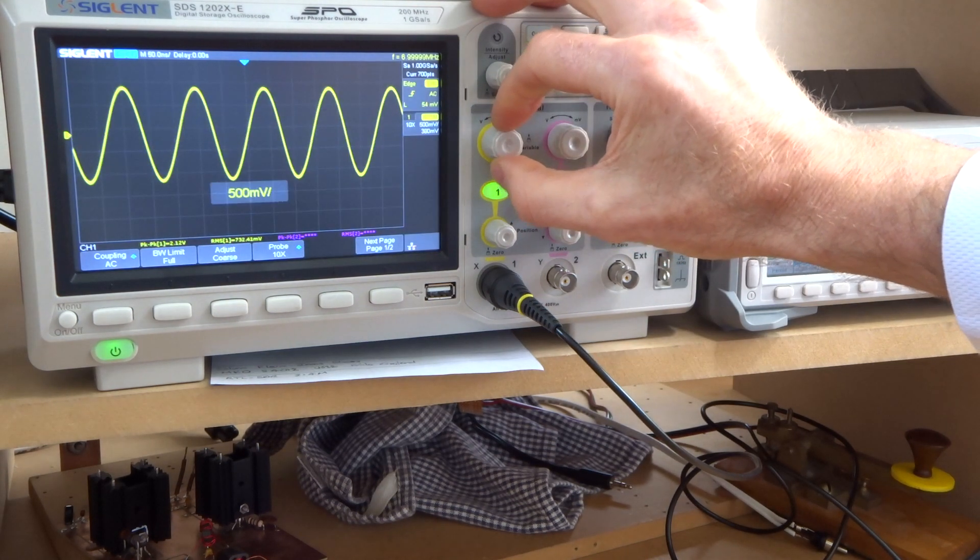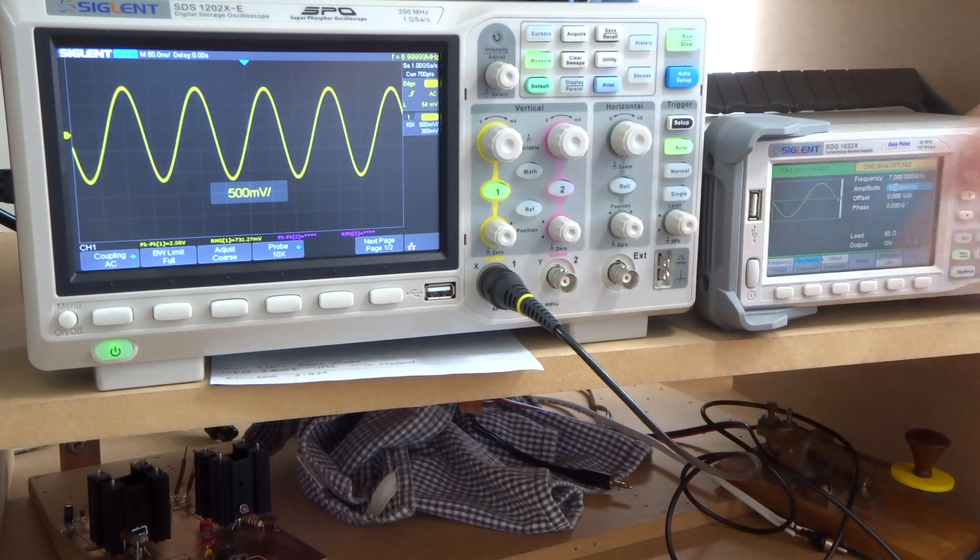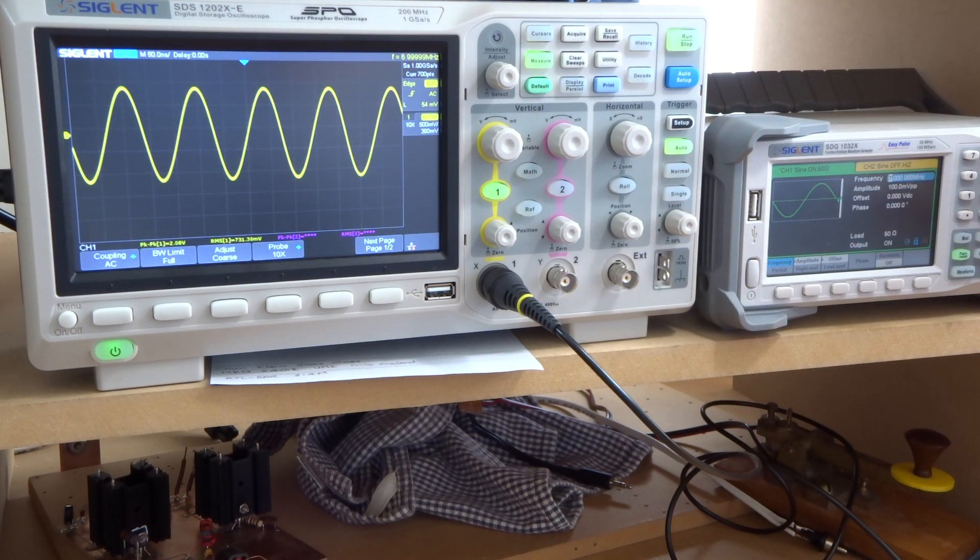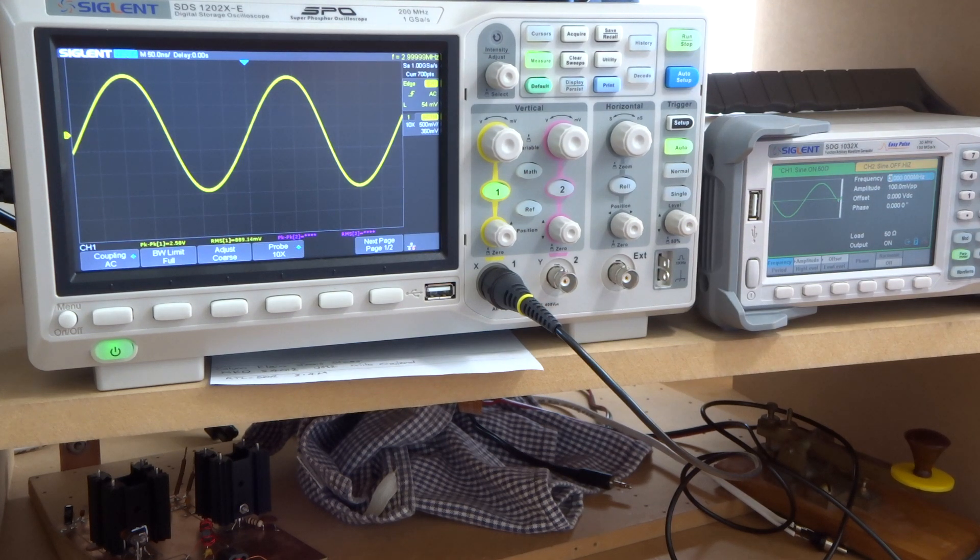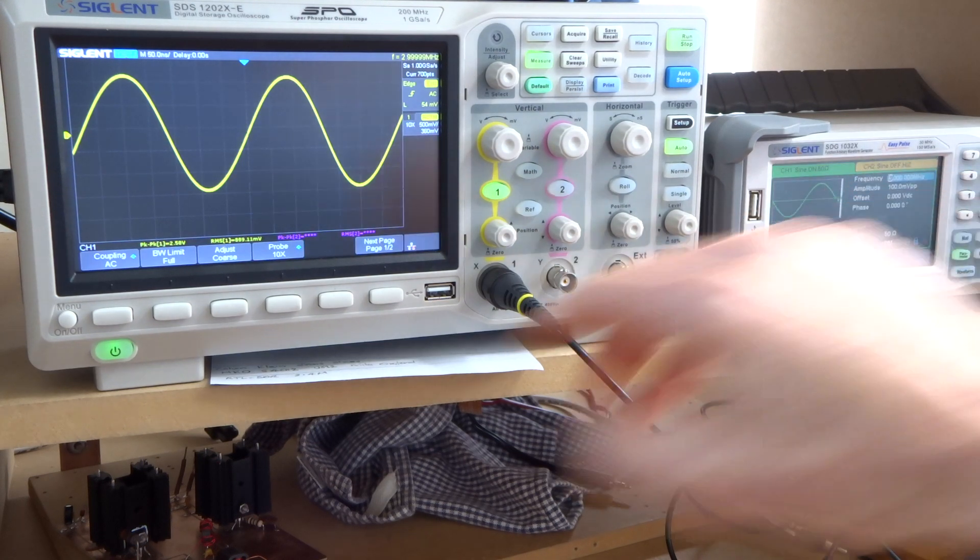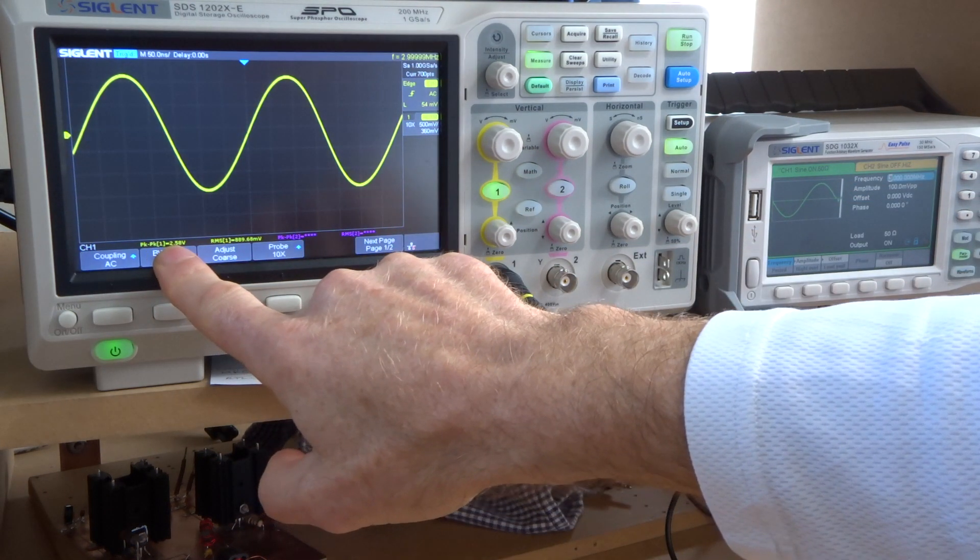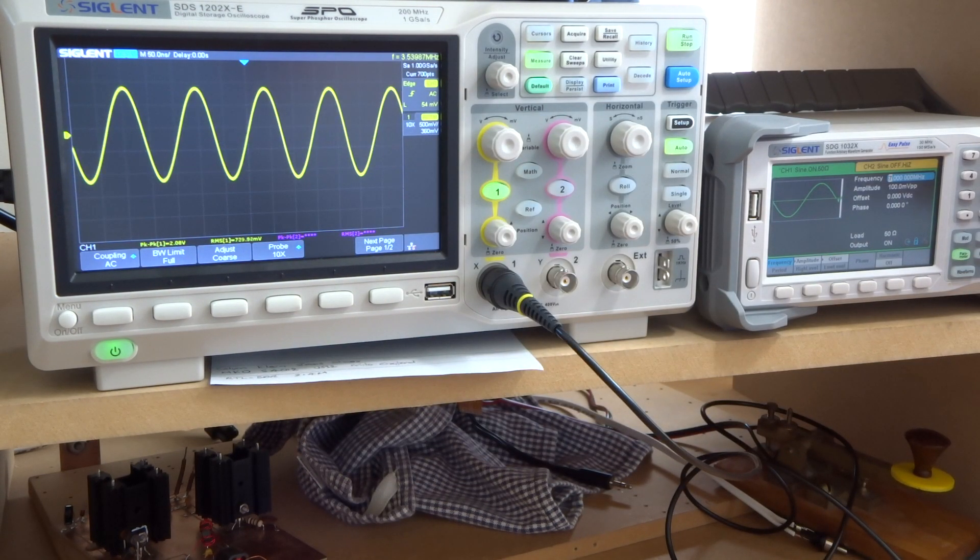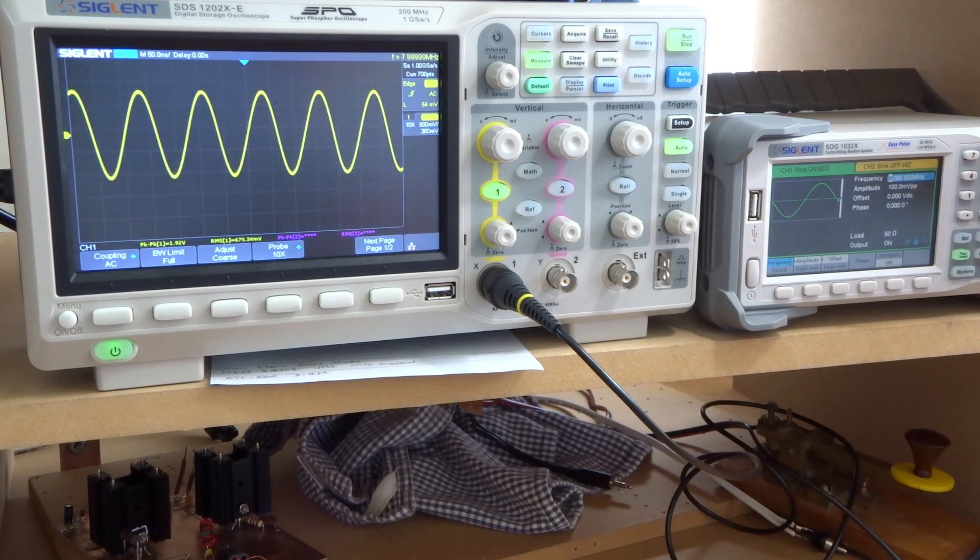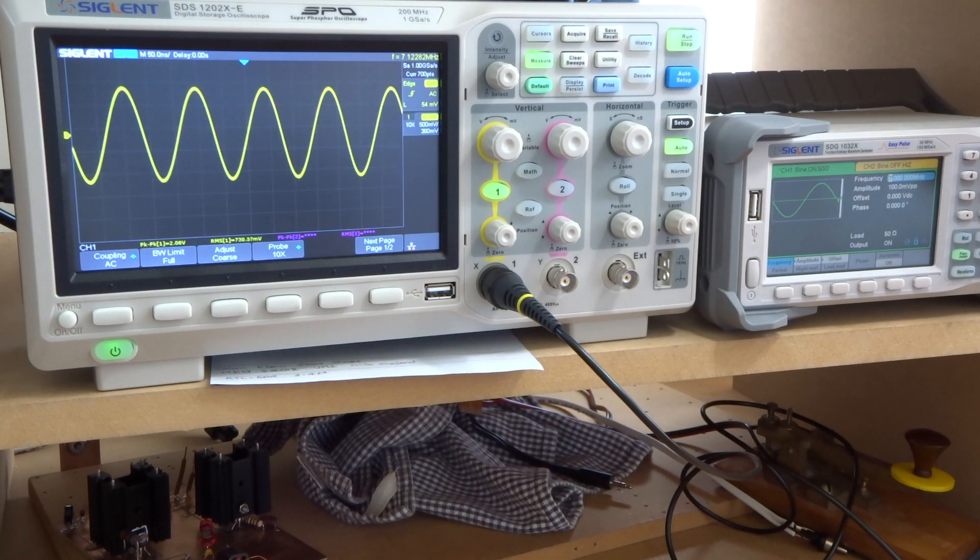Bringing that back down to 100 millivolts peak to peak. That's at 7 megahertz. If I drop that down to say 3 megs, lower than the bottom of the 80 meter band, we're getting 2.58 or 2.6 volts peak to peak. And then back up to 7, and then to 8 - 1.92, 2.08. So we're getting there a good 25, 26 odd dB of gain.